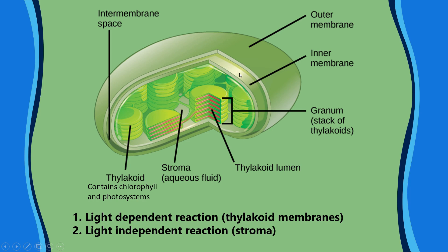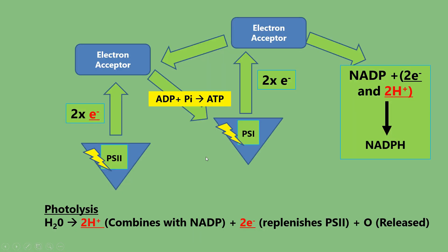This is the structure of a chloroplast — I highly recommend you draw this. It has a double membrane: an outer membrane and an inner membrane. Within it, the aqueous fluid is called the stroma, where the light-independent reactions occur. Inside are thylakoids — flattened, frisbee-like structures that contain loads of chlorophyll and accessory pigments arranged into photosystems. When you have a stack of thylakoids together, that forms a granum; the plural is grana, and there are many grana within the organelle.